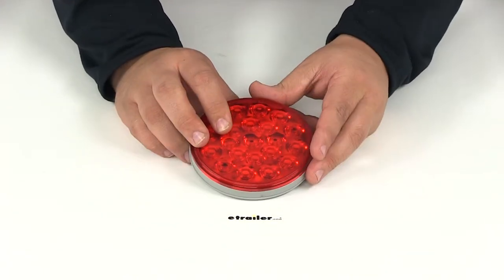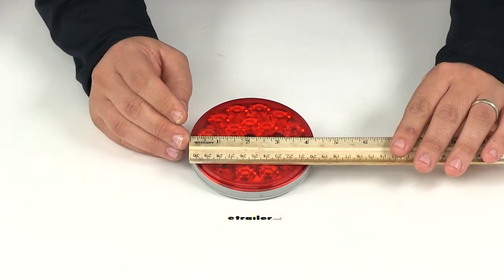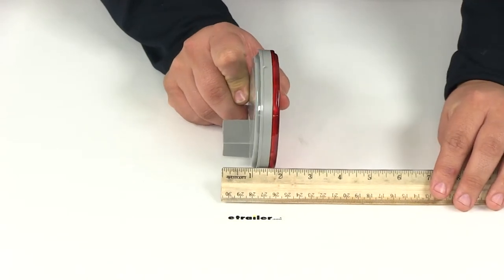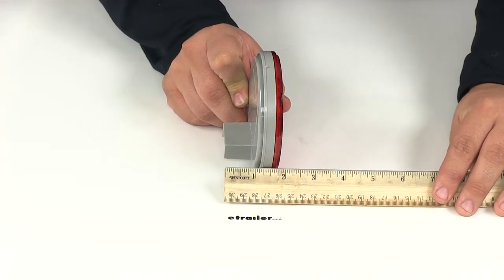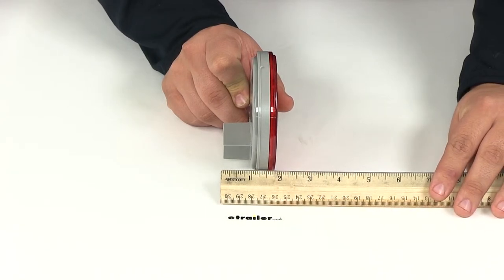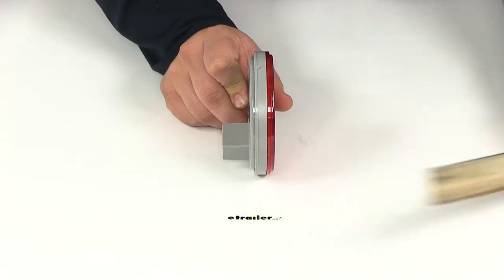Taking a look at the overall dimensions, the diameter measuring from edge to edge is four and one-quarter inches. The depth including the plug is about one and seven-eighths of an inch, and not including the plug is only about three-quarters of an inch.